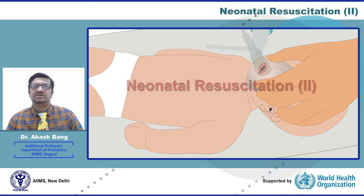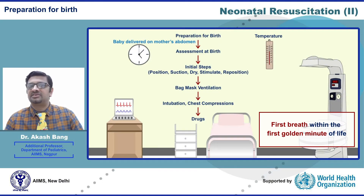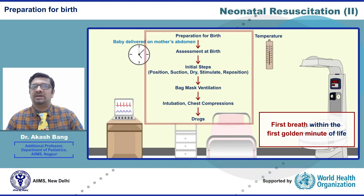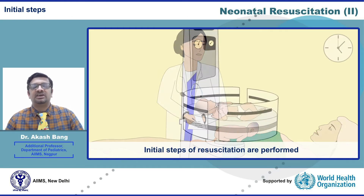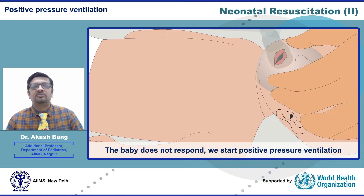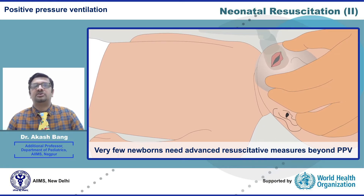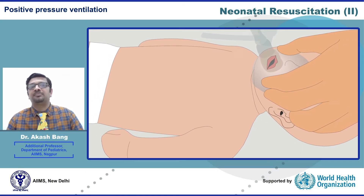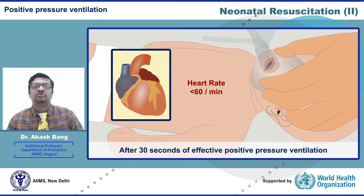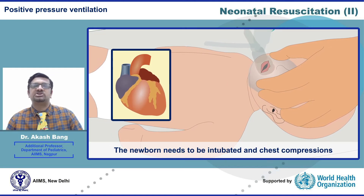We will cover advanced measures like intubation, chest compression, and medications. The neonatal resuscitation is a very orderly and systematic process where we follow sequential steps to restore life. Immediately after birth, the newborn is assessed for any need of resuscitation; if needed, initial steps are performed, and if the baby does not respond, we start positive pressure ventilation. Very few newborns will need advanced resuscitation measures beyond PPV, but when they do, we must be well prepared. If after 30 seconds of effective PPV the heart rate is below 60, the newborn needs to be intubated and chest compression needs to be started.